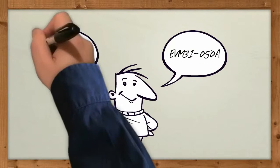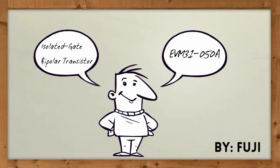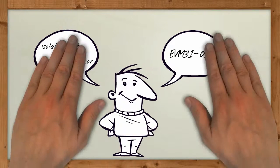EVM31050A, an isolated gate bipolar transistor, or IGBT, by Fuji, is your partner in renewable energy.